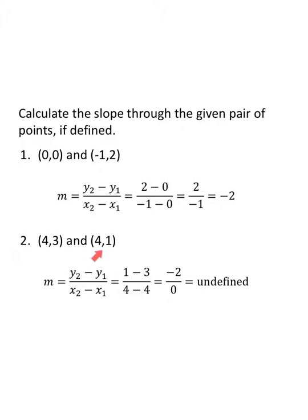Two points: (4, 3) and (4, 1). Subtracting the y values: one minus three. Subtracting the x values in the same order: four minus four. One minus three is negative two, but four minus four is zero. Any time you're dividing by zero, you can't do that — a zero in the denominator means undefined slope. My x values didn't change, so we get a zero denominator. This is a vertical line.